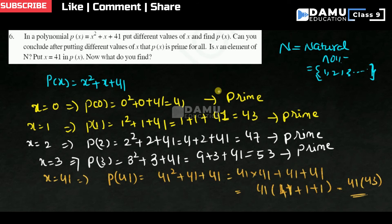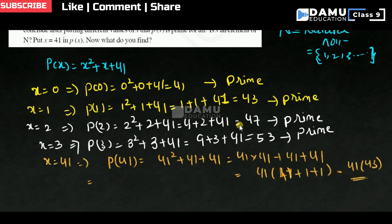So what we will get in this condition? So 41 into 43, what is the case here? 41 into 43 will be 1763. So 1763, maybe it is divisible. This is not prime.